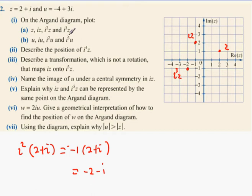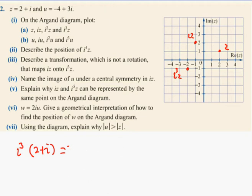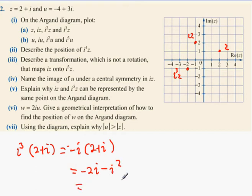And that is I squared Z. Next one's I cubed Z — replace this with I cubed. We all know that I cubed is -i, so we have minus i times (2 + i), and what we get is -2i - i², and minus minus 1. So it's 1 - 2i: 1 across, 2 down.